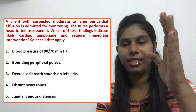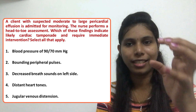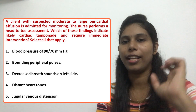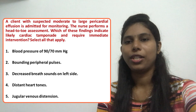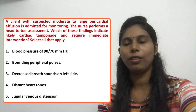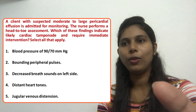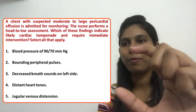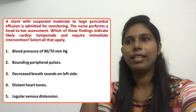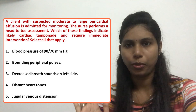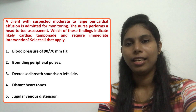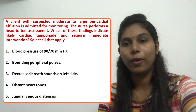Some of you may already have the answer since we just discussed the signs of cardiac tamponade. Option one: blood pressure of 90/70 mmHg. This indicates hypotension with a narrowed pulse pressure — that is a correct answer. If we see this symptom, we know it indicates likely cardiac tamponade.